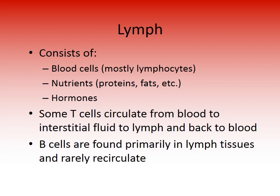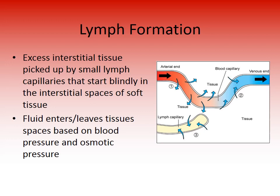Lymph, the liquid of the lymphatic system, is composed of blood cells and mostly lymphocytes, and contains nutrients such as proteins and fats, as well as hormones. Some T cells circulate from blood to interstitial fluid to lymph and back to blood again. B cells are found primarily in lymph tissue and rarely recirculate. Excess interstitial tissue fluid is picked up by small lymph capillaries that start blindly in the interstitial space of soft tissues.